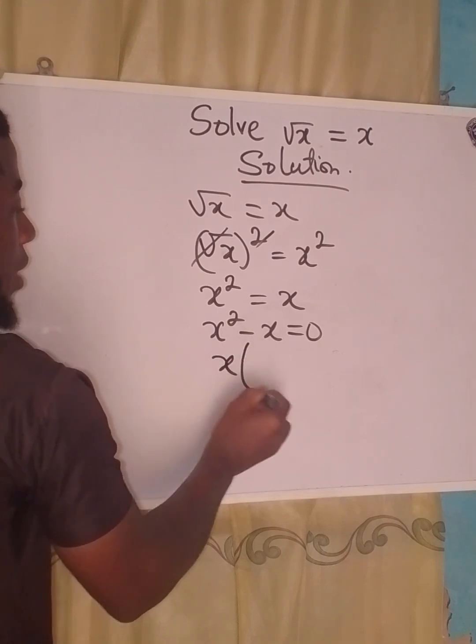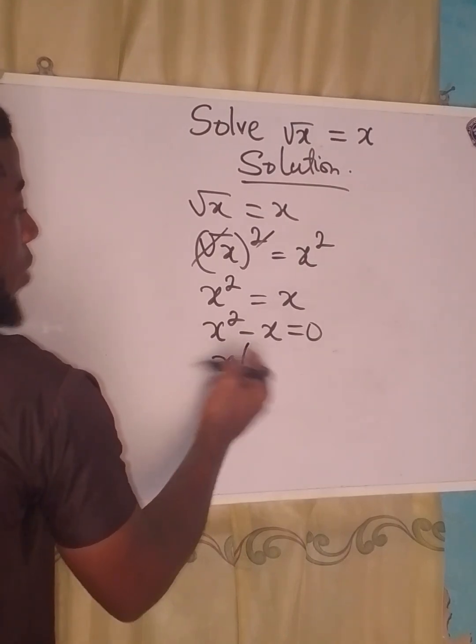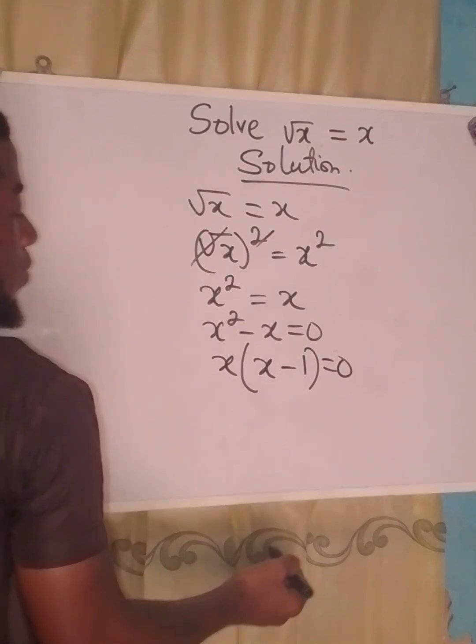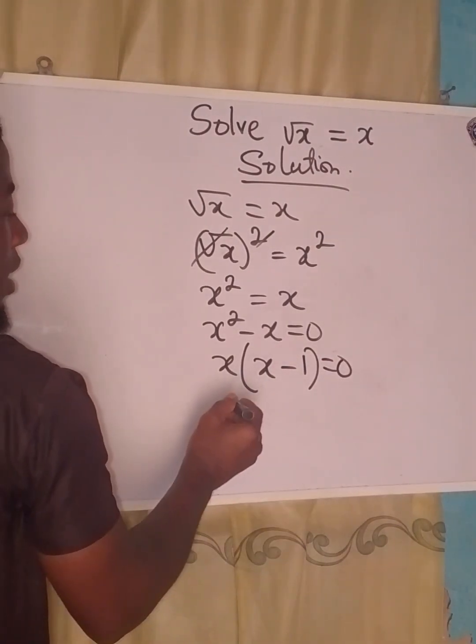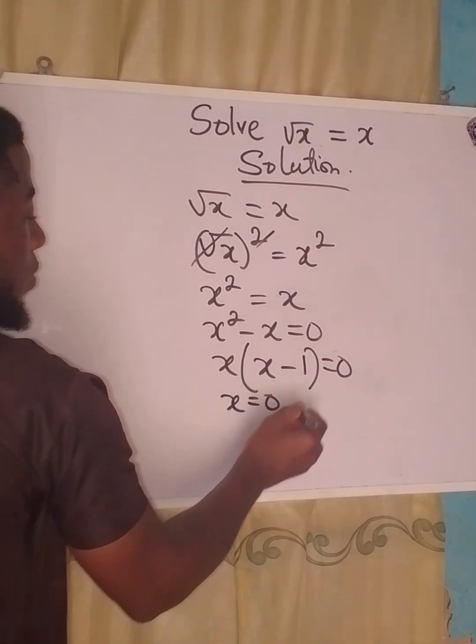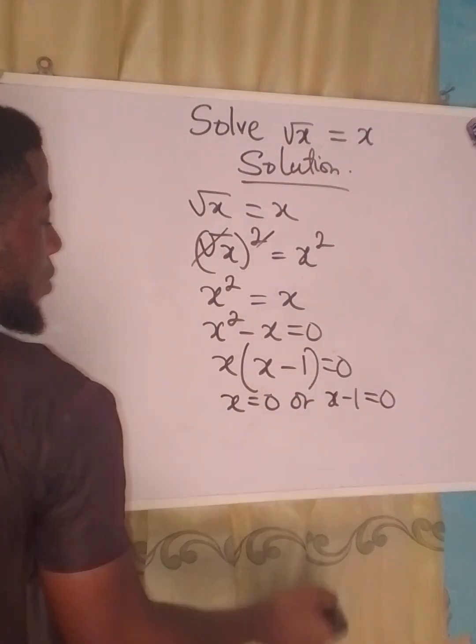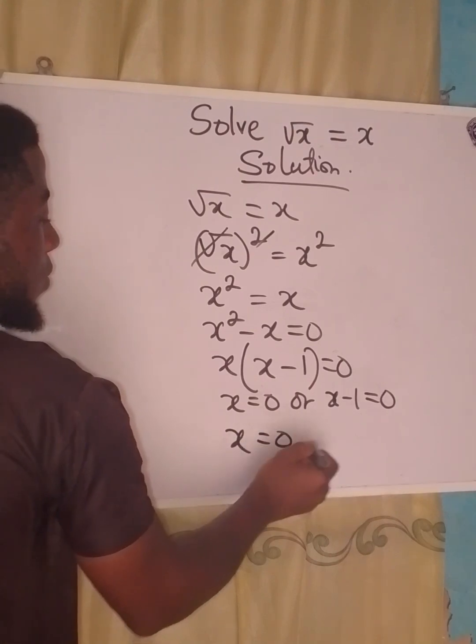We bring x out, then we have one x in minus one, and this is equal to zero. So now it is either x is equal to zero or x minus one equals zero.